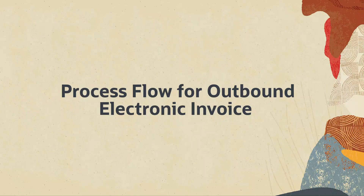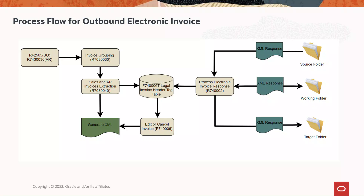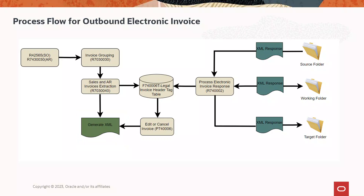Let us look at the process flow for outbound electronic invoice. JD Edwards Enterprise One Localizations for European Union enables you to generate e-invoices in XML format as per UBL 2.1 standards for the payments received from customers. These invoices can be submitted to tax authorities for validation. You can modify the template of the invoice based on country-specific version.